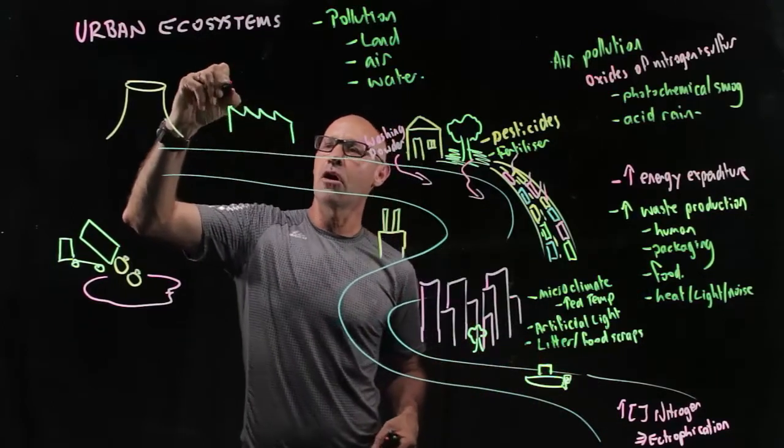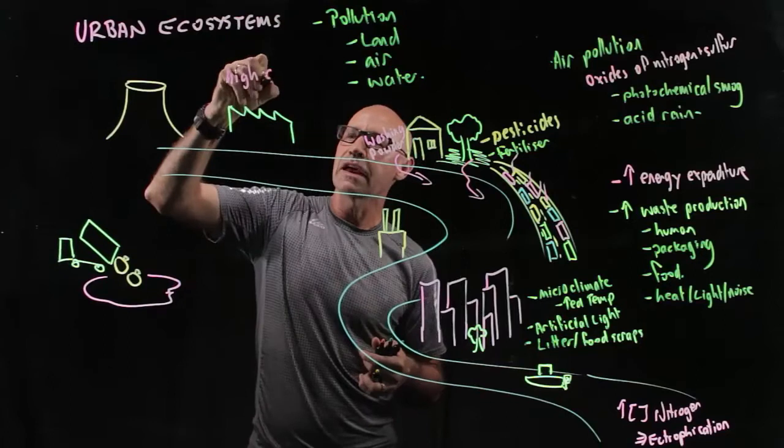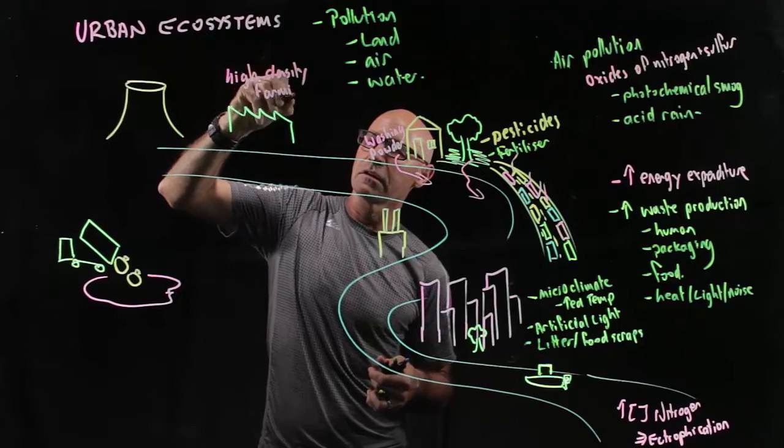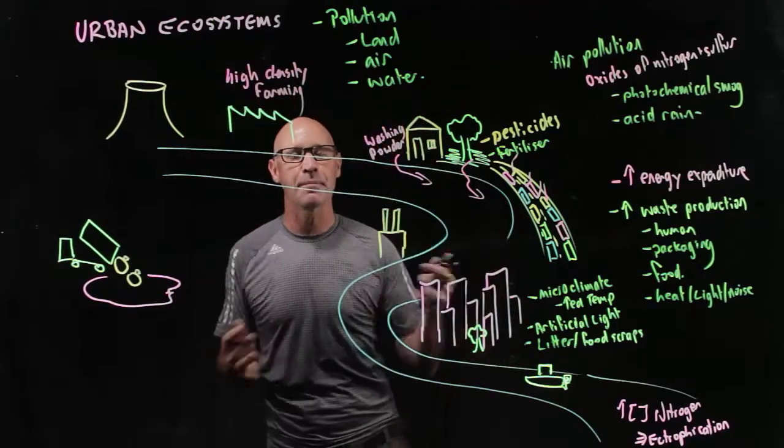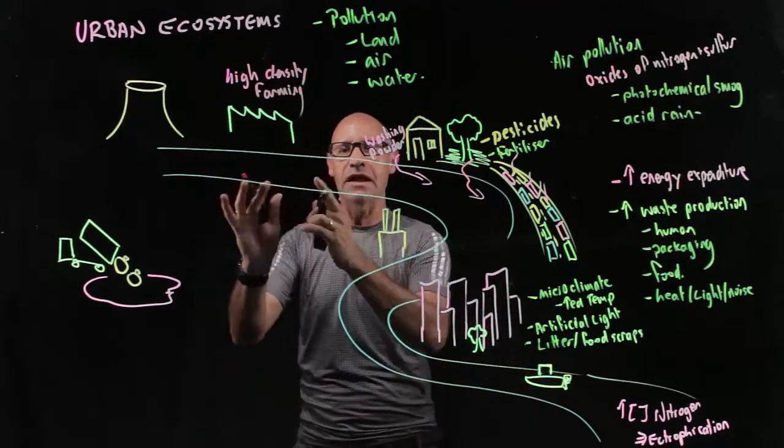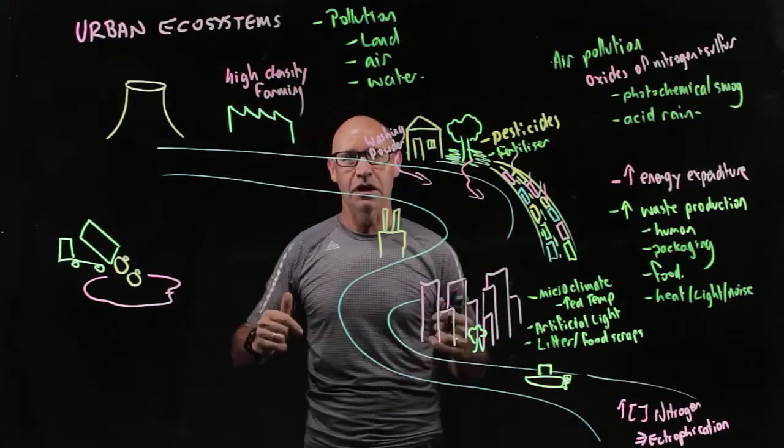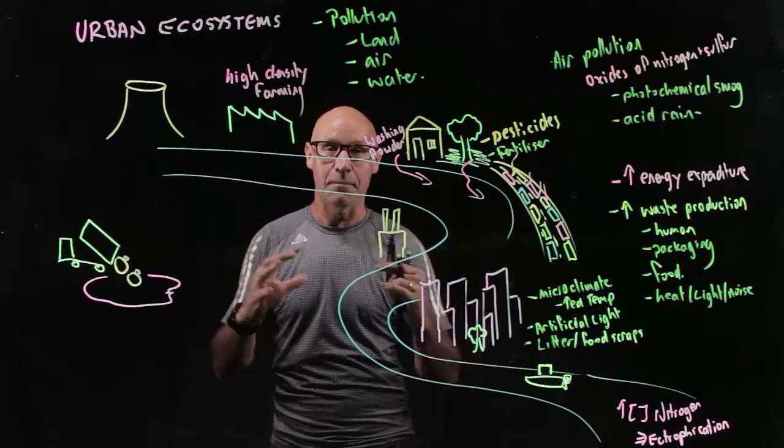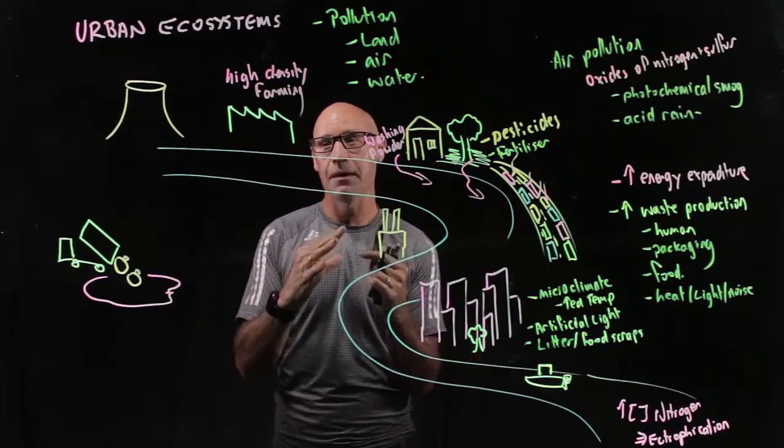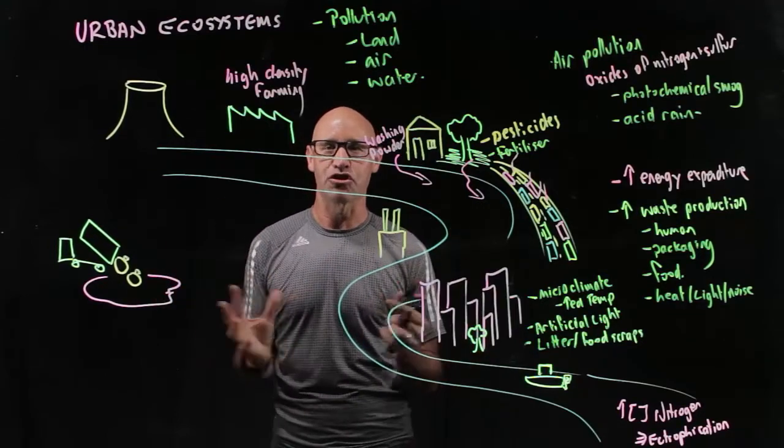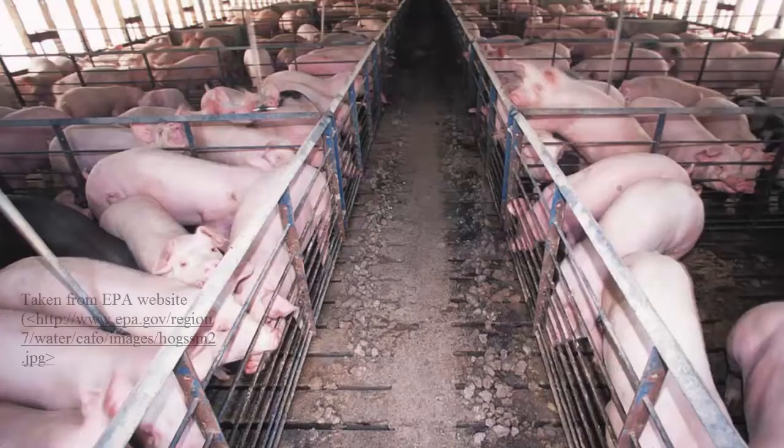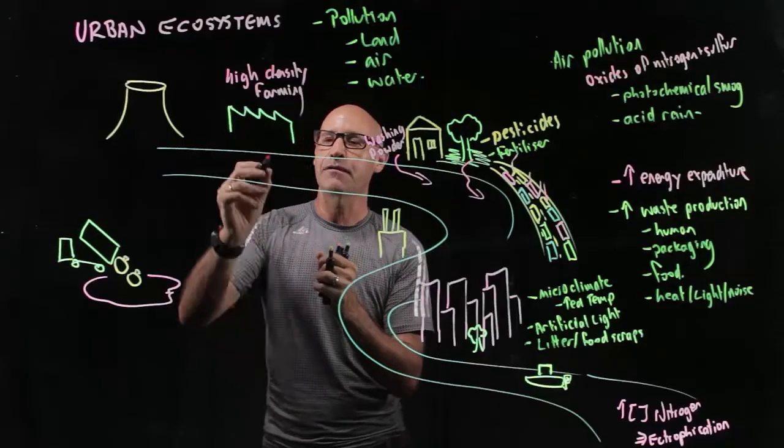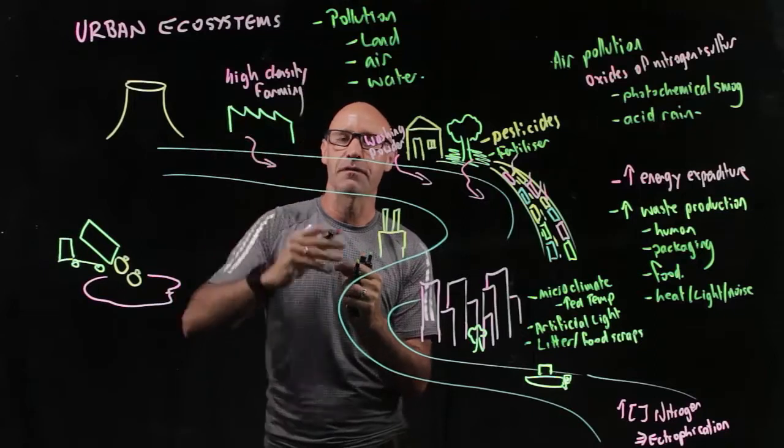So we've got high density farming close to the cities. So we're going out a little bit, out past the suburbs, but we've got a high density farming there. So maybe our dairies and our piggeries and our chicken farms where they're factory produced. And so we've got a large population of livestock growing in a very small area. And of course, we've got this risk of runoff of waste.